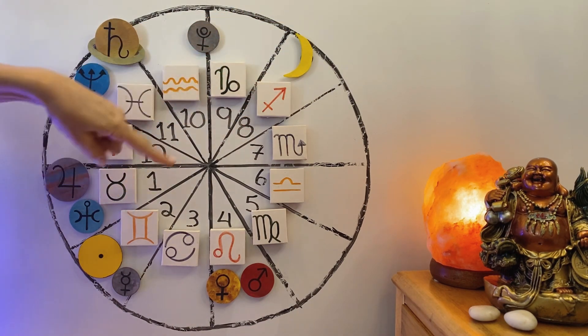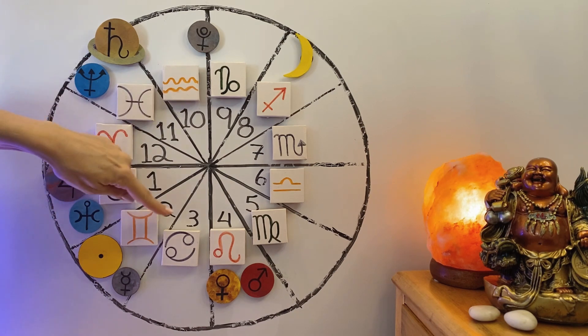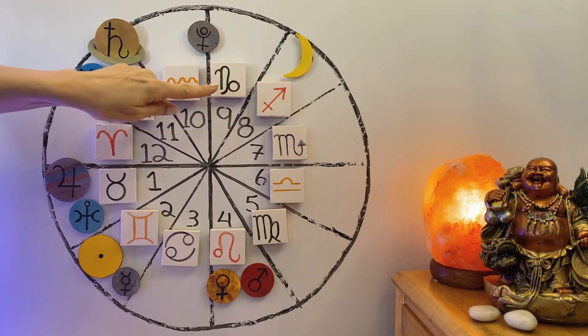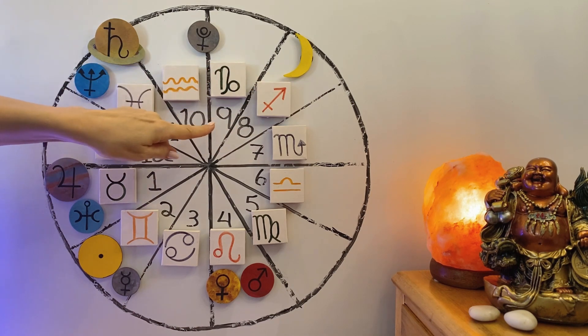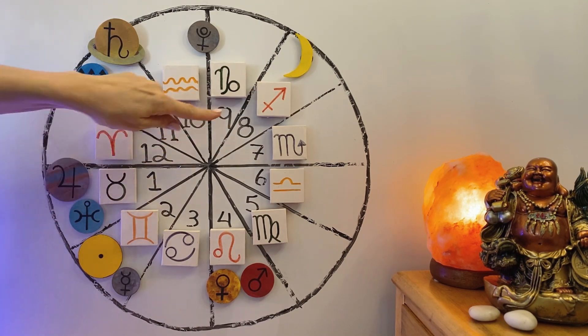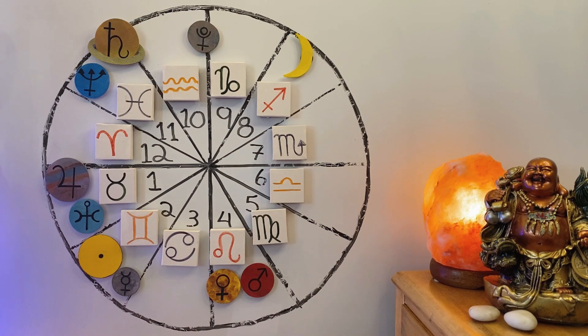And remember, full moons bring a closure sometimes. They also reveal things. So maybe something will be revealed in terms of debt or financing through someone else. Maybe something is coming to an end in that area as well. This is a sun-moon opposition. So this is your stuff, your wealth, and other people's money, and other people's wealth. And an opposition is always a question of finding balance. So that could be between perhaps how much money you're putting into something, and how much money someone else is putting into something.